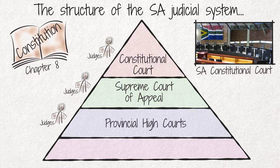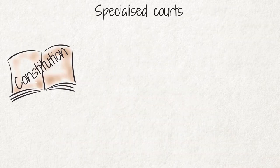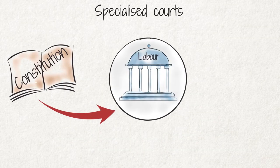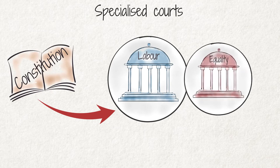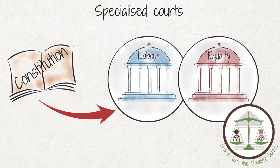Below the high court, you find regional and district courts presided over by magistrates. The constitution also allows for the creation of specialized courts like the Labour Court and the Equality Court. We explain the function of the Equality Courts in more detail in our video, how to use the Equality Court to challenge discrimination.